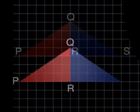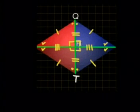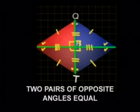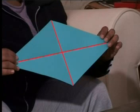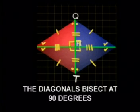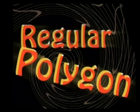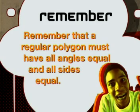We created the rhombus using the right-angled scalene triangle and identified its properties. A rhombus is a special quadrilateral with all four sides equal, two pairs of opposite angles equal, two lines of symmetry. The diagonals bisect each other at 90 degrees and bisect the angles of the rhombus. Here's a last question: do you think a rhombus is a regular polygon? A regular polygon must have all angles equal and all sides equal — so no, because the angles are not all equal.